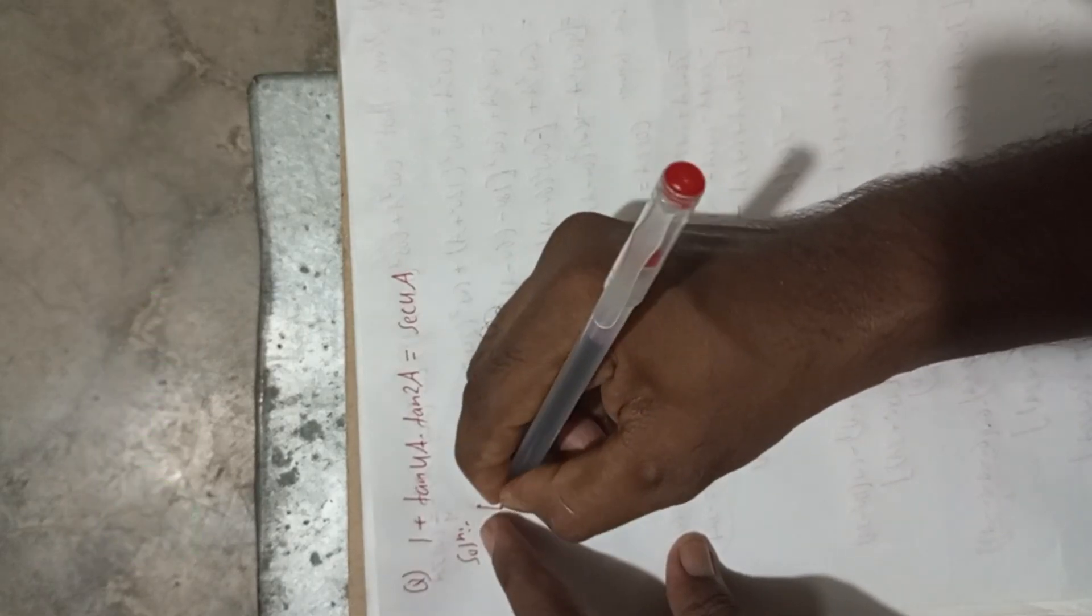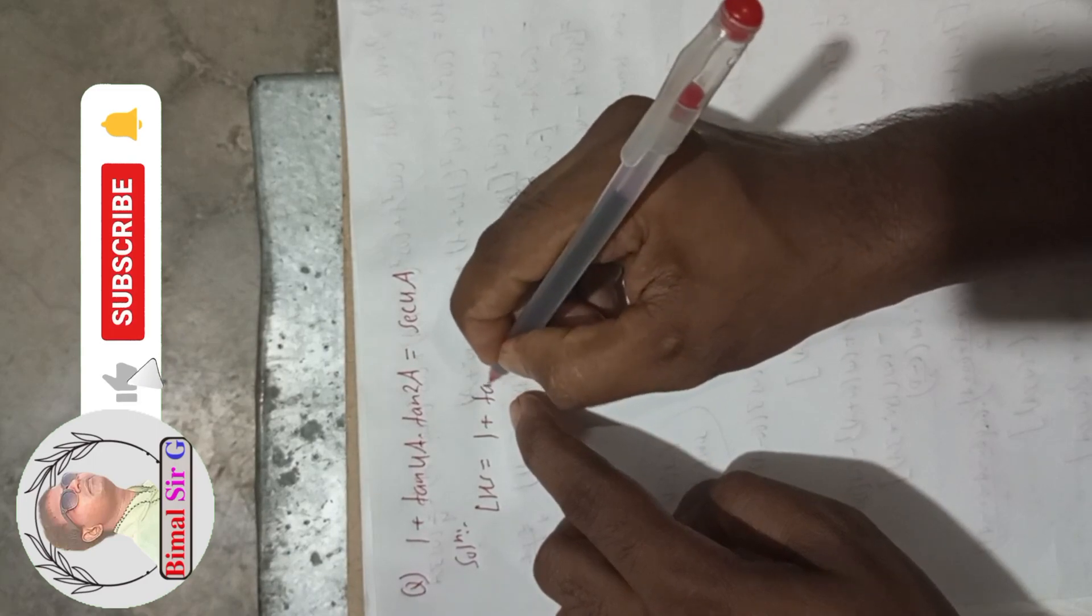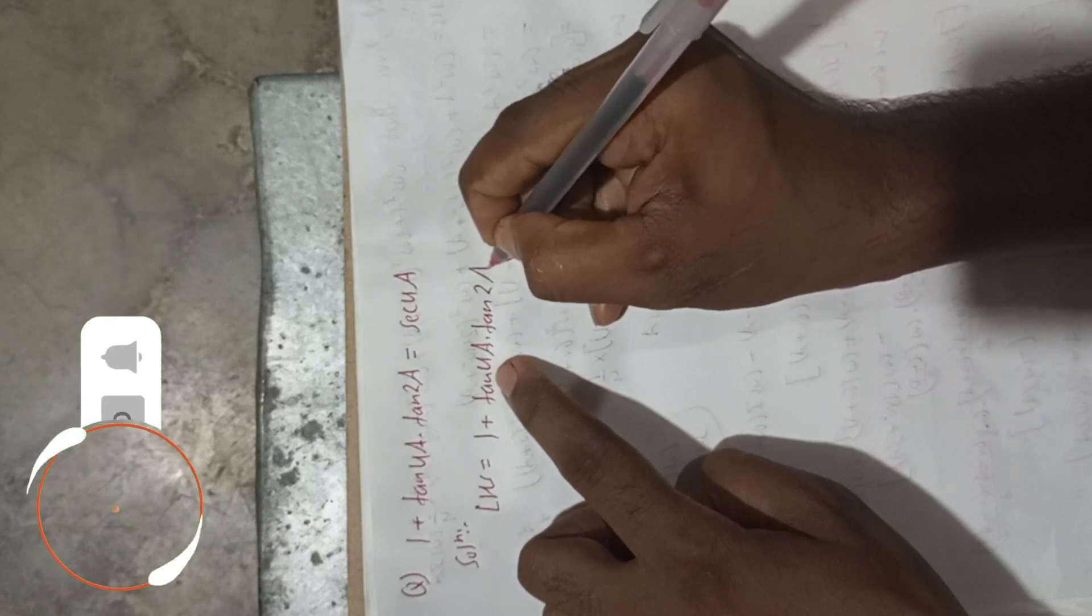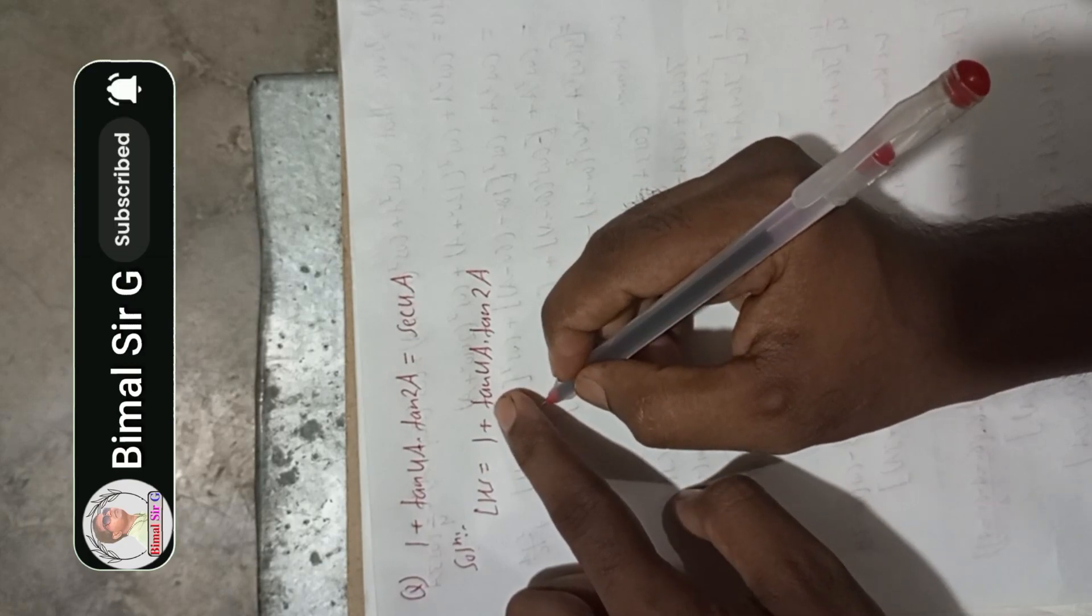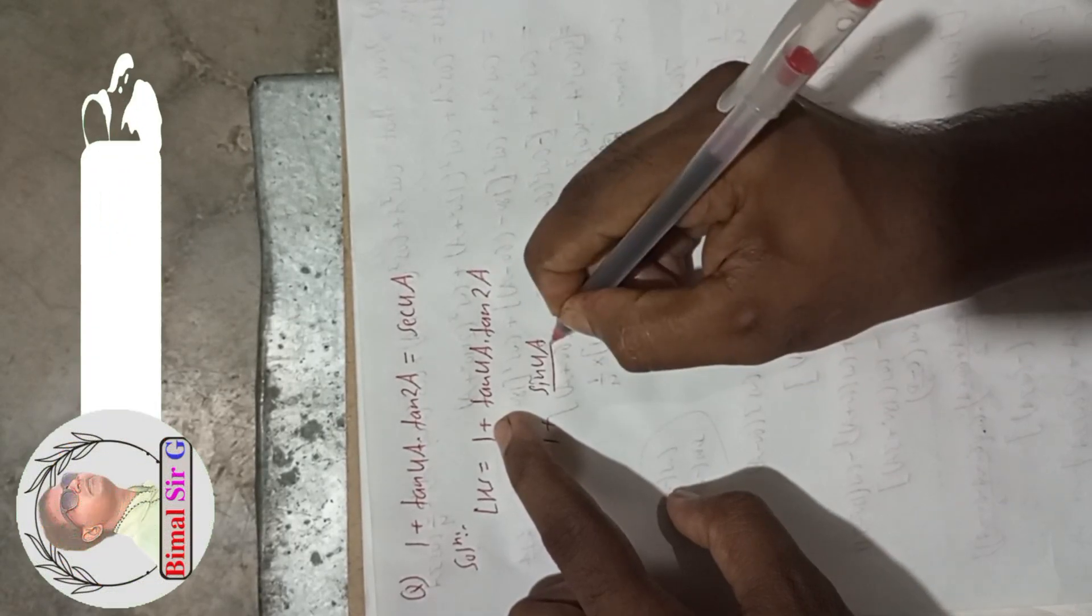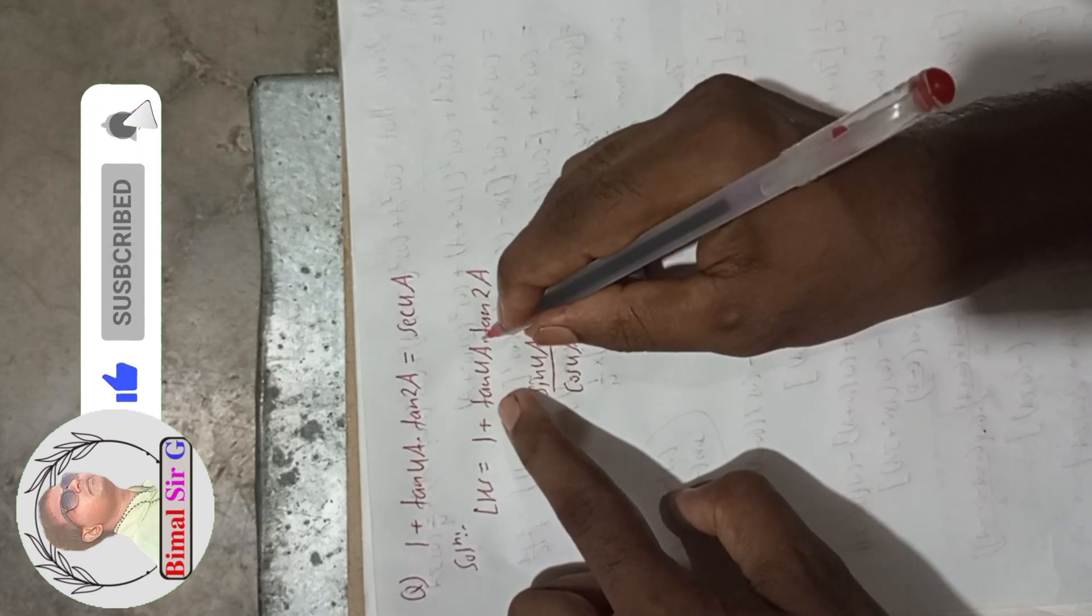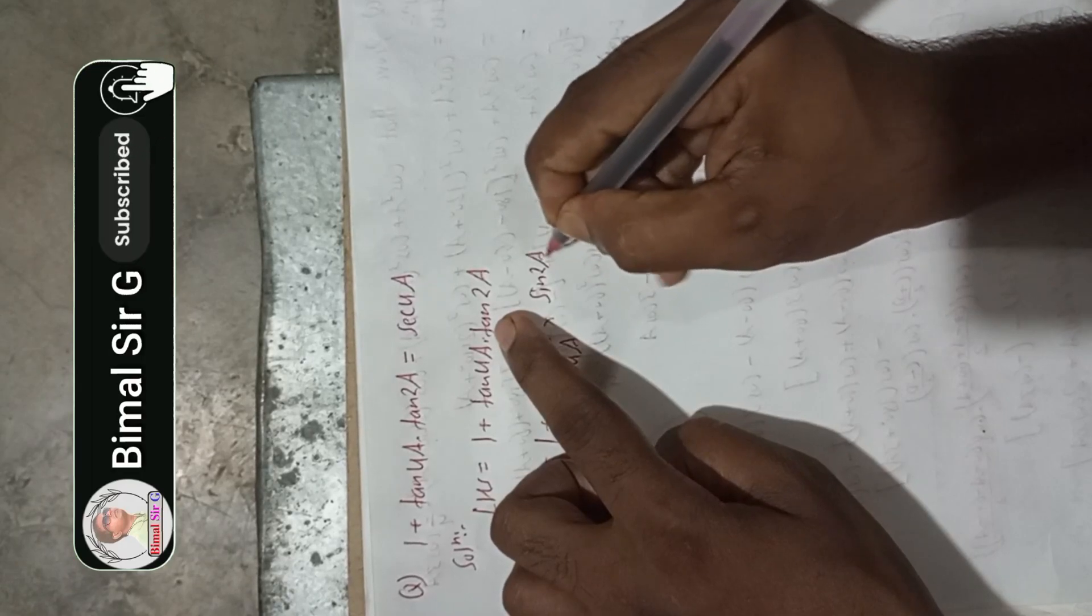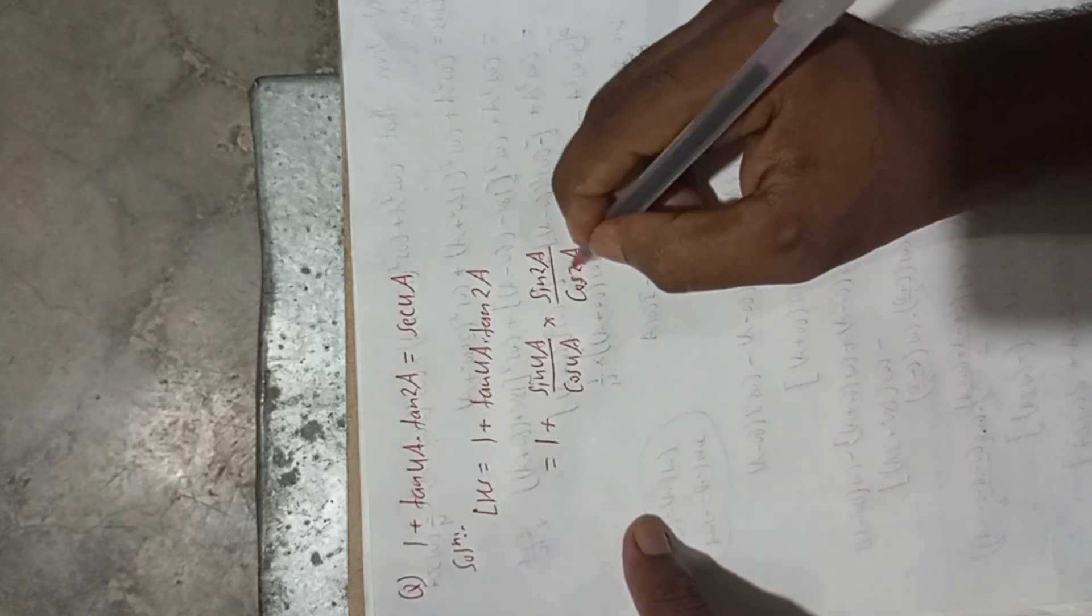Take the LHS: LHS = 1 + tan(4a) × tan(2a). Now for tan(4a), we can write sin(4a)/cos(4a), and tan(2a) = sin(2a)/cos(2a).